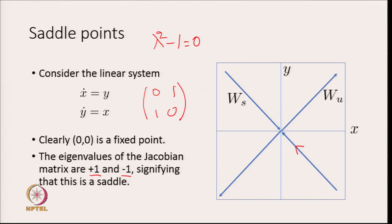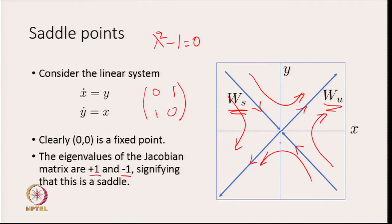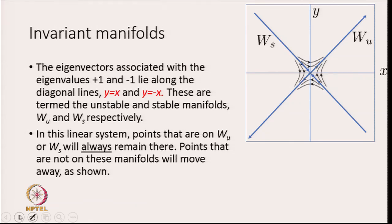This saddle has a stable part (inward direction) and an unstable direction, with trajectories moving away except on the eigenvectors. The eigenvectors associated with eigenvalues +1 and -1 lie along the diagonal lines y = x and y = -x. These are termed the stable and unstable manifolds, denoted w_s and w_u respectively. In this linear system, points on w_u or w_s always remain on these manifolds.